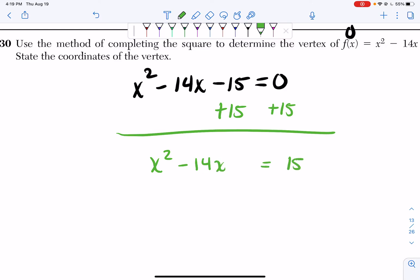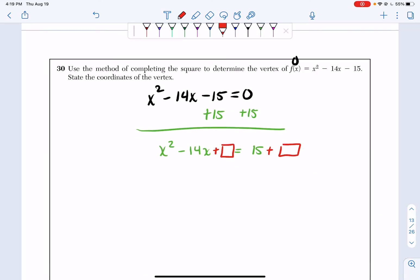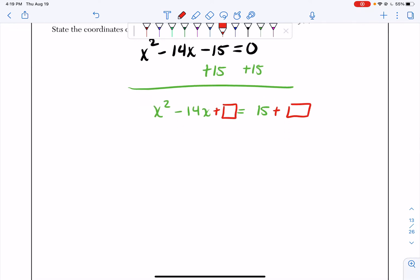However, whenever we complete the square, you know that we have to add a square to both sides of our equation. And the number that goes in the squares would be the same on each side. So here's how we approach.